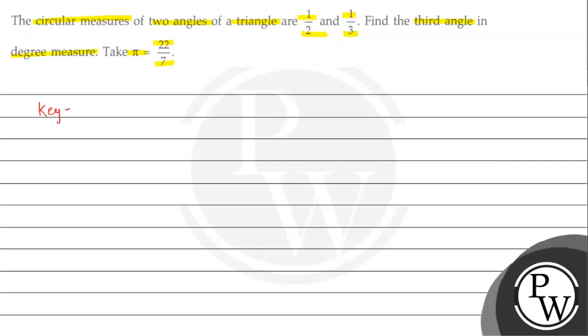It's a very simple question. First, we have to write which concept. Let's write. First, the first concept is sum of all the three angles of a triangle is 180 degrees.